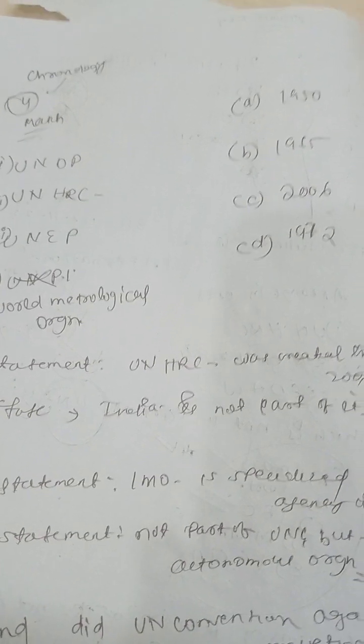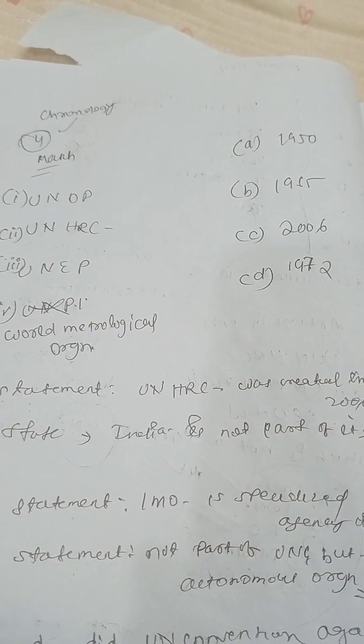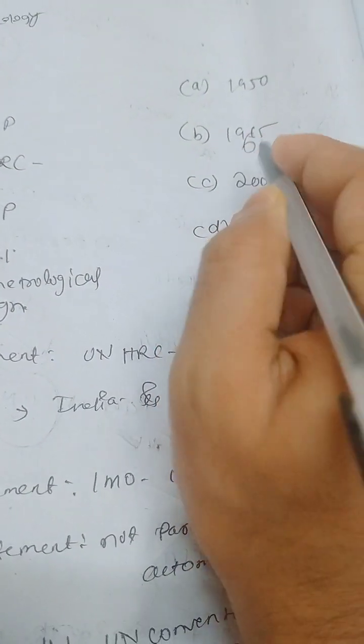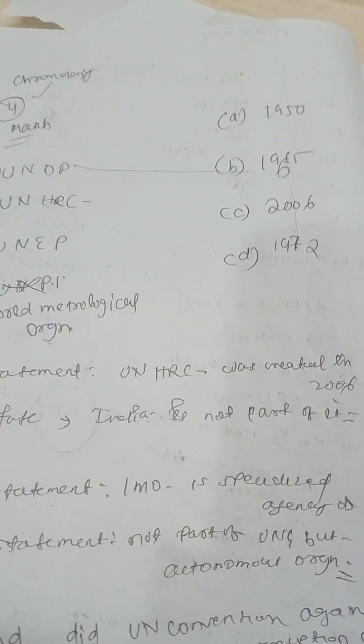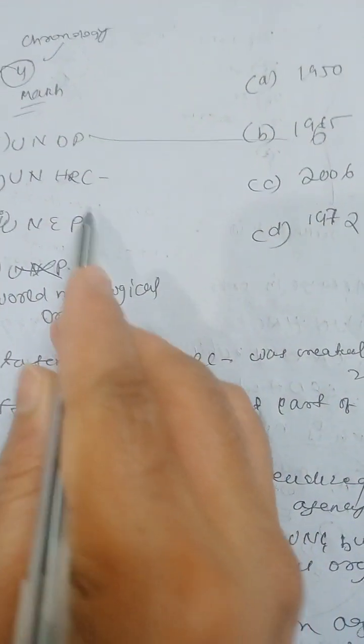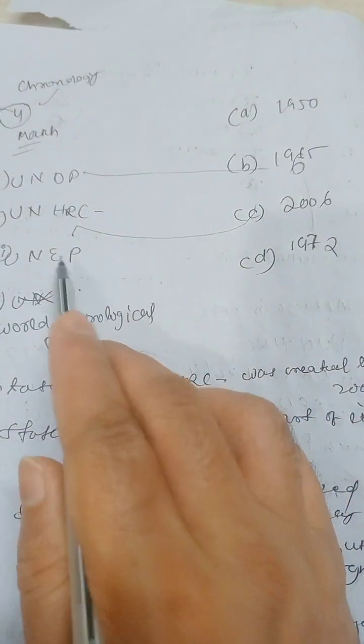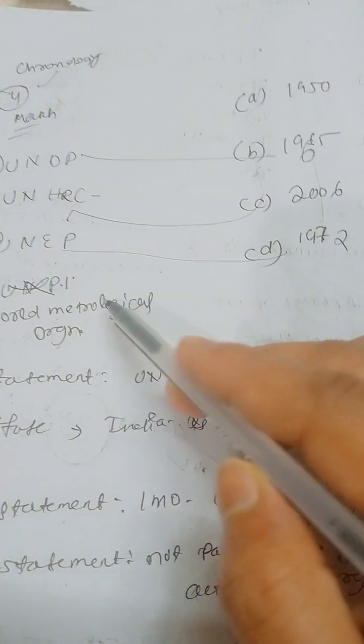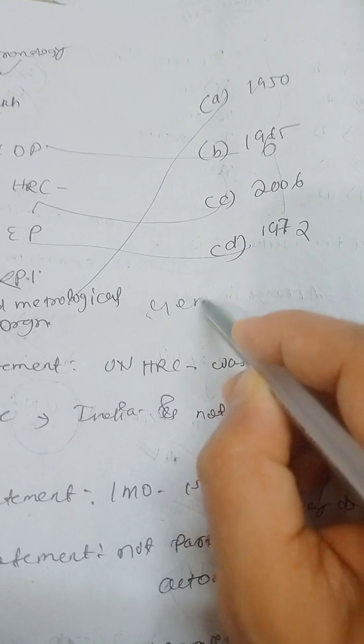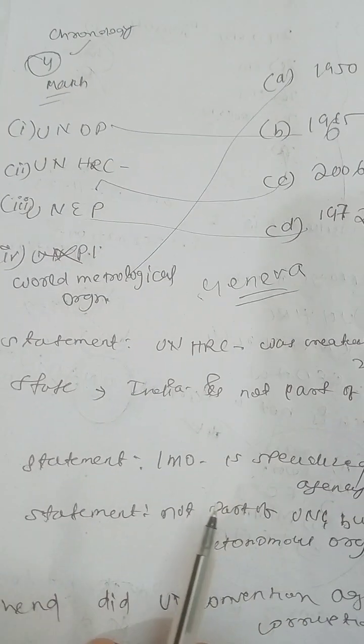The fourth question is a match-the-following: UNDP — United Nations Development Programme — was established in 1965. The UN Human Rights Council (UNHRC) was established in 2006, as we already discussed. UNEP — United Nations Environment Programme — was established in 1972. The World Meteorological Organization (WMO) was established in 1950 and is headquartered in Geneva.